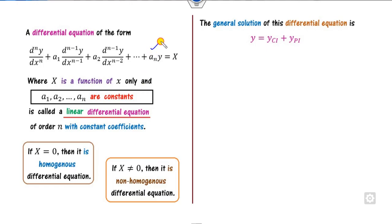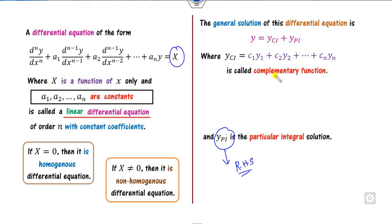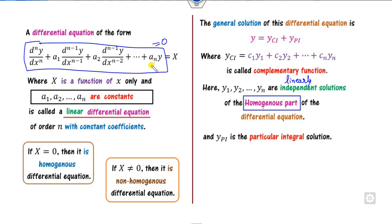Once you have the differential equation, the general solution is written as the sum of two parts: yc (the complementary solution) and yp (the particular integral). The particular integral depends on the right-hand side X, while the complementary part is the solution of the homogeneous portion. The yi values are linearly independent solutions solved using the homogeneous equation. First we set the right-hand side to zero and solve to get the complementary function, then we solve the X part to get the particular integral.